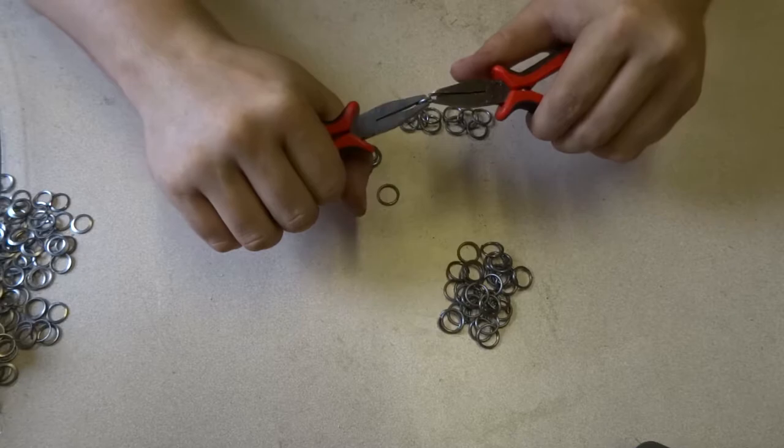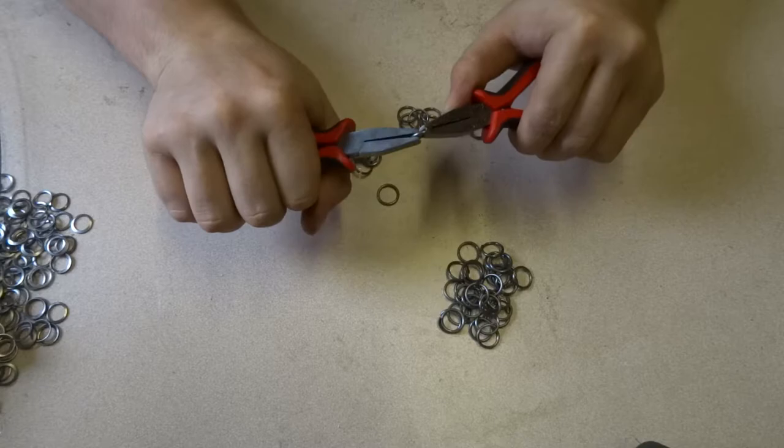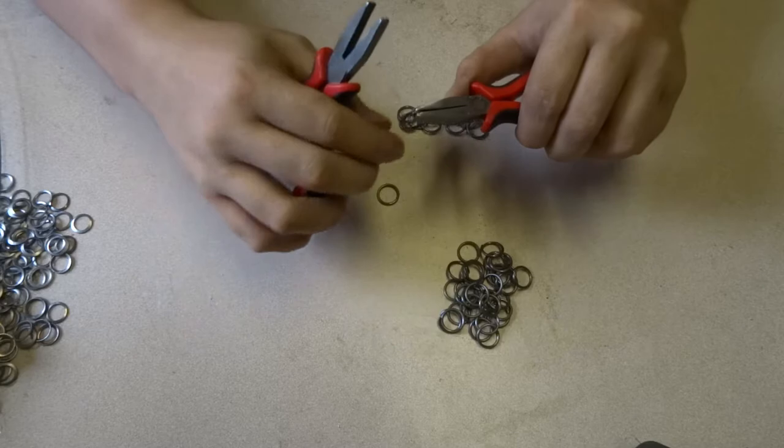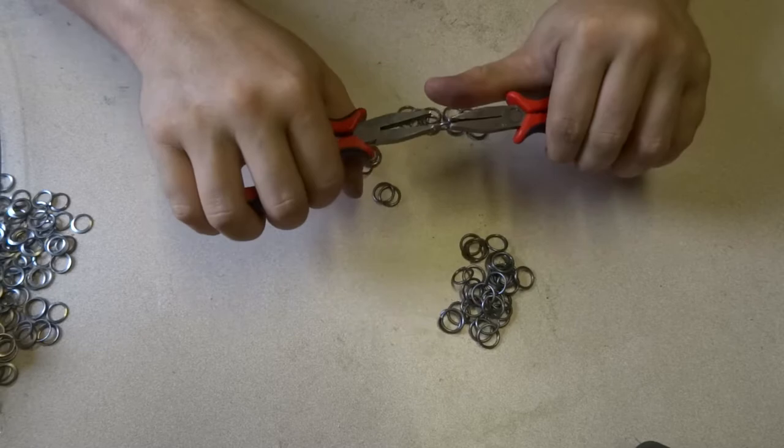The first step in producing butted mail is making sure you have all the tools and materials you'll need for the job. I'll cover these in more detail as the video goes on, but to list them all at once, you'll need a mandrel, wire, wire cutters, and pliers.